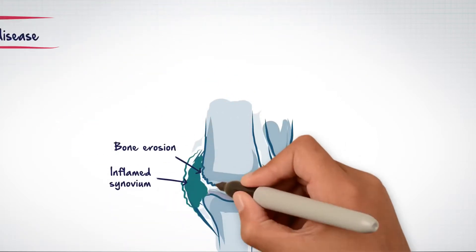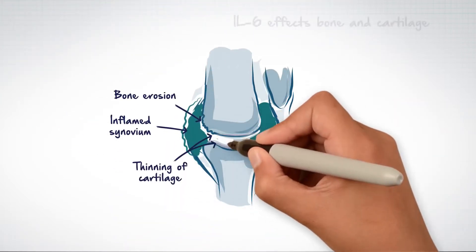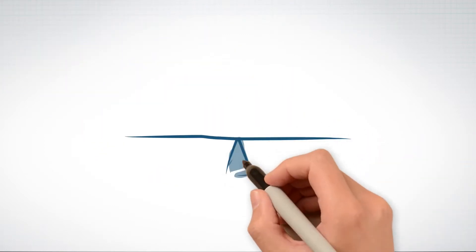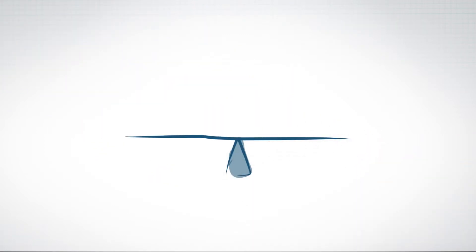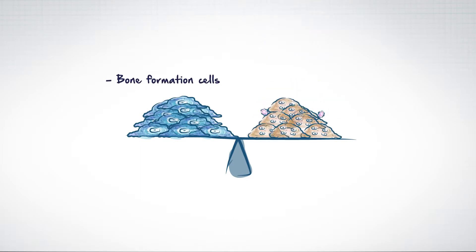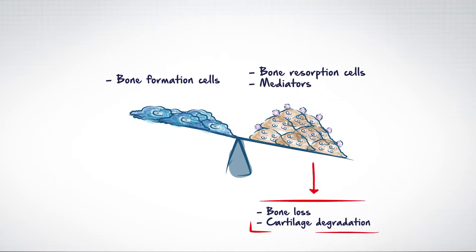IL-6 also contributes to RA through its effects on both bone and cartilage. The events leading to joint damage are promoted by altering the balance of bone formation cells, bone resorbing cells, and mediators, causing bone loss and cartilage degradation.